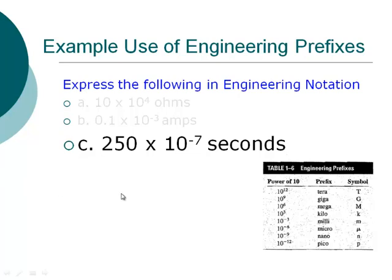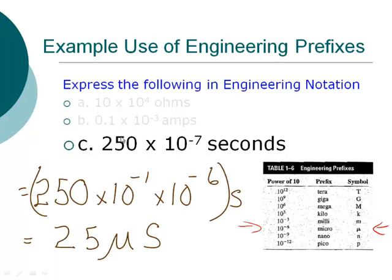Here's another example involving seconds. I have 200 times 10 to the power of minus 7 seconds. The closest multiple of 3 to 10 to the minus 7 is 10 to the minus 6. So I can say this equals 250 times 10 to the negative 1 times 10 to the negative 6. Using micro to replace 10 to the minus 6, and multiplying 250 times 10 to the negative 1 gives 25 — so the result is 25 microseconds.